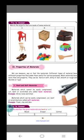Soft materials are those which can be easily compressed, cut, bent, and scratched. Examples of soft materials are foam, clay, skin, and cotton.